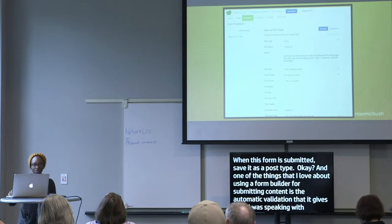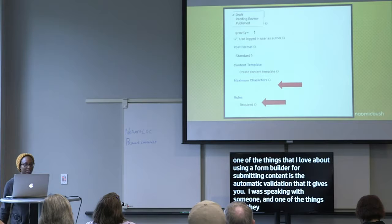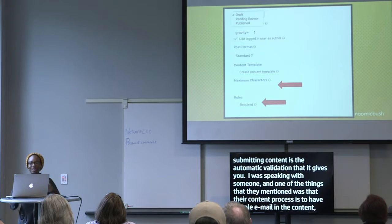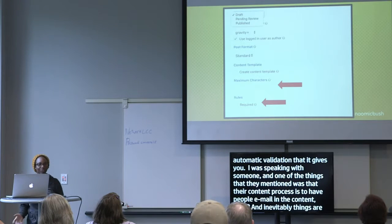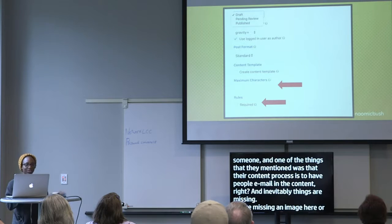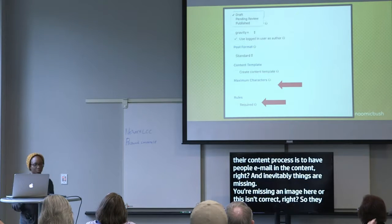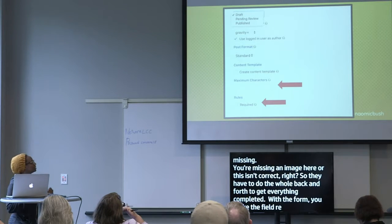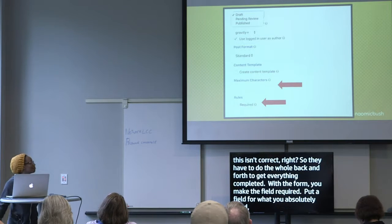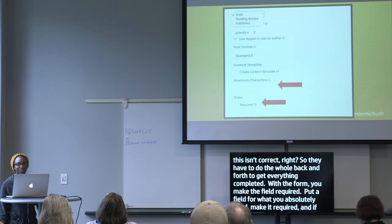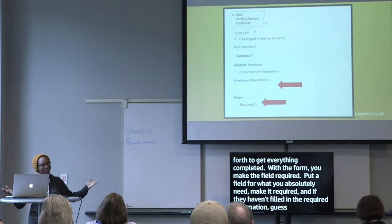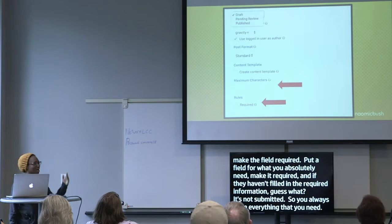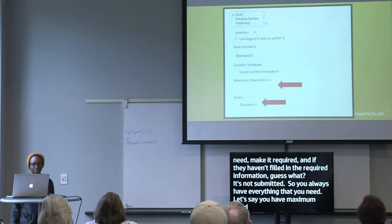I was speaking with someone whose content process was to have people email in content — and inevitably things were missing: an image here, something incorrect there — so they had to do the whole back and forth to get everything completed. But with a form, you just make the field required. If they haven't filled in the required information, it's not submitted — so you always have everything you need. You can also set a maximum word count and many other automatic validation options.